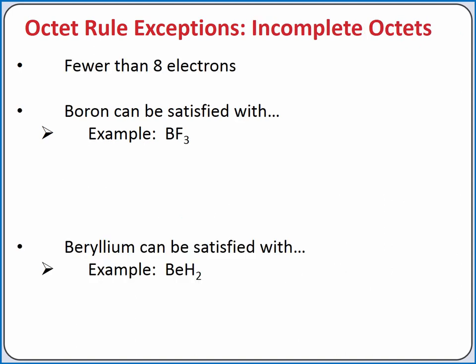Some atoms in Lewis structures are satisfied with fewer than 8 electrons. For example, boron can be satisfied with just 6 valence electrons. In the Lewis structure for boron trifluoride, boron has a single bond with each of the 3 fluorine atoms. Although we may think we could create a double bond with one of the fluorine atoms using a lone pair of electrons on fluorine, boron is satisfied with just 6 electrons instead of 8.